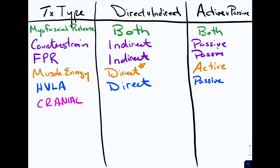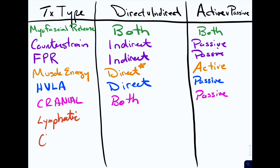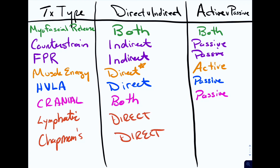Then you have cranial treatment. Cranial can be used in both ways — you can have direct or indirect techniques depending on what you're treating and how the patient is responding, so it's both. However, the patient is never actively involved in using their muscles, so we write passive. You also have lymphatic treatments and Chapman's reflexes. Both of these treatments are direct techniques because you're directly moving into restrictions, and both are passive because the patient is relaxing while you're treating them.